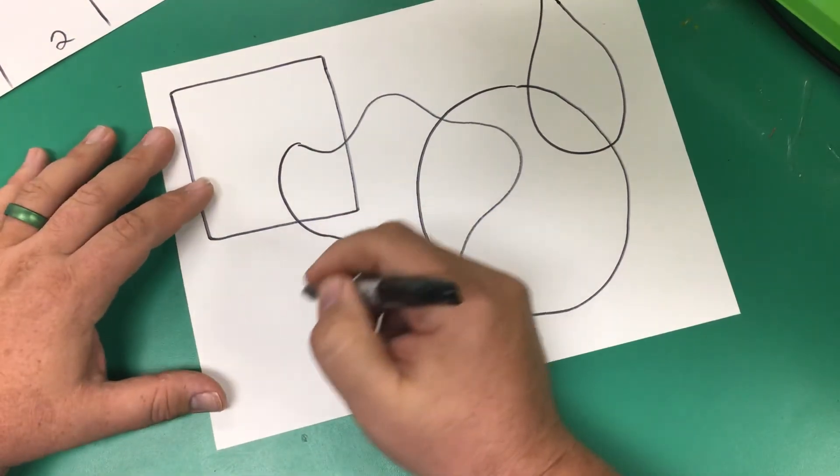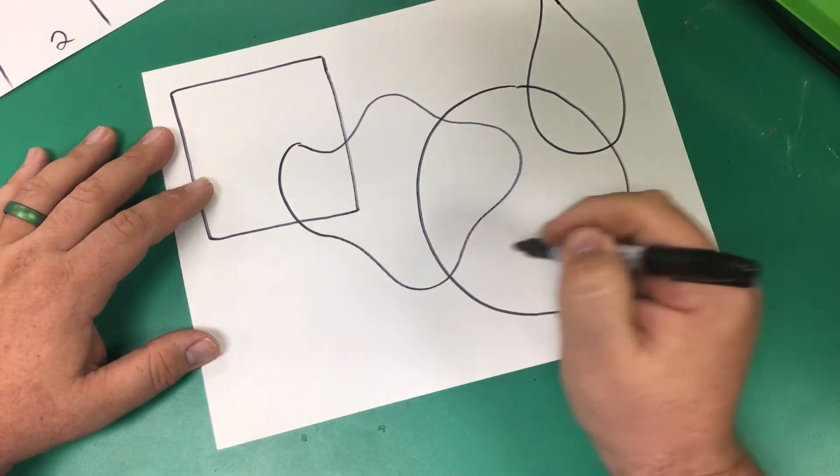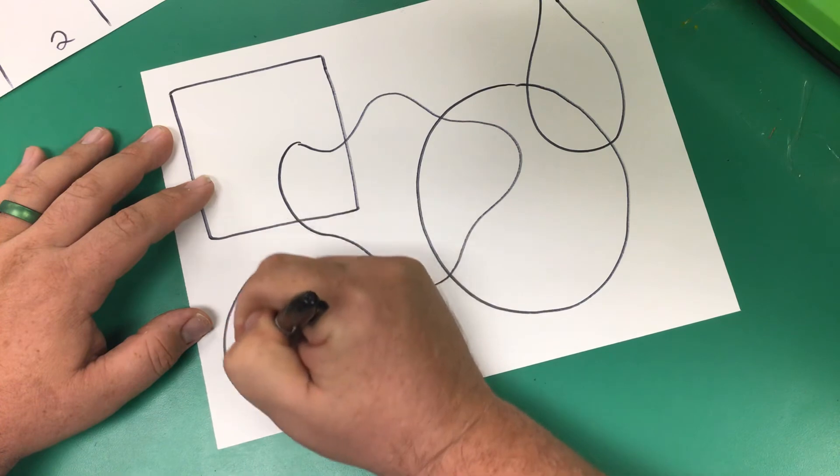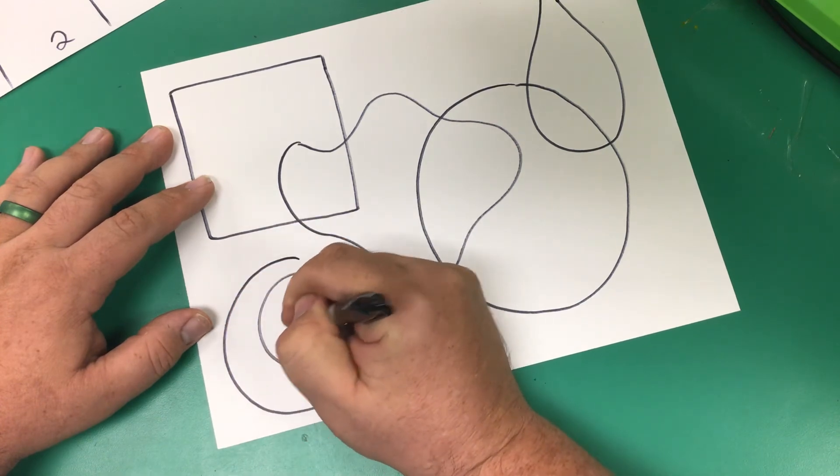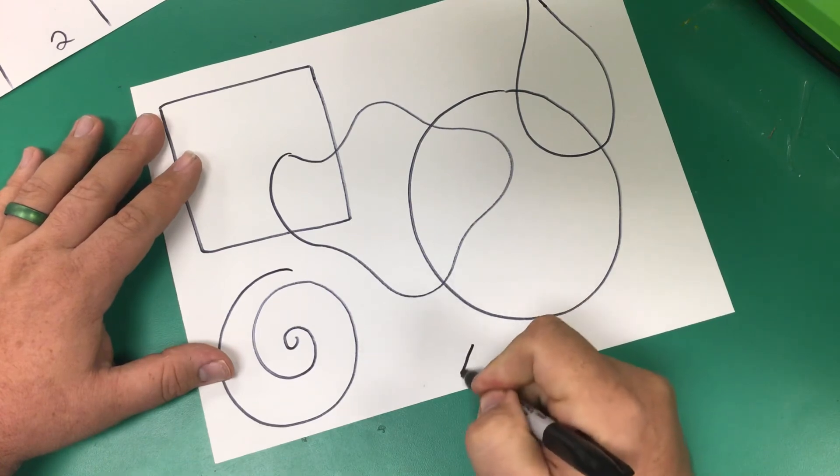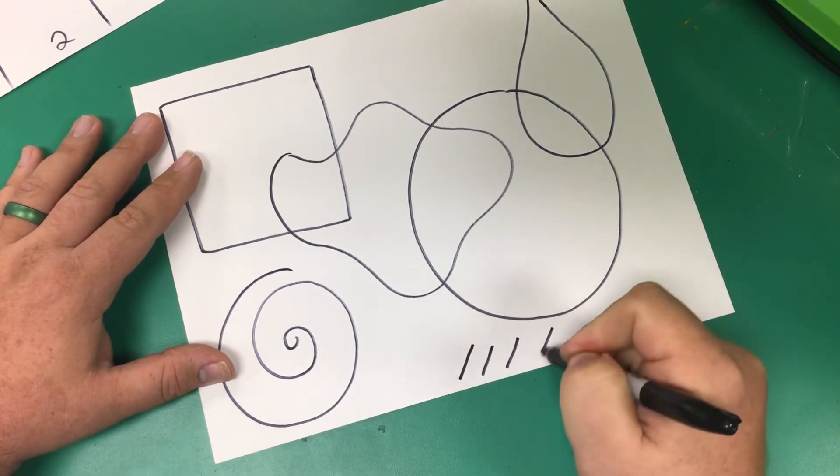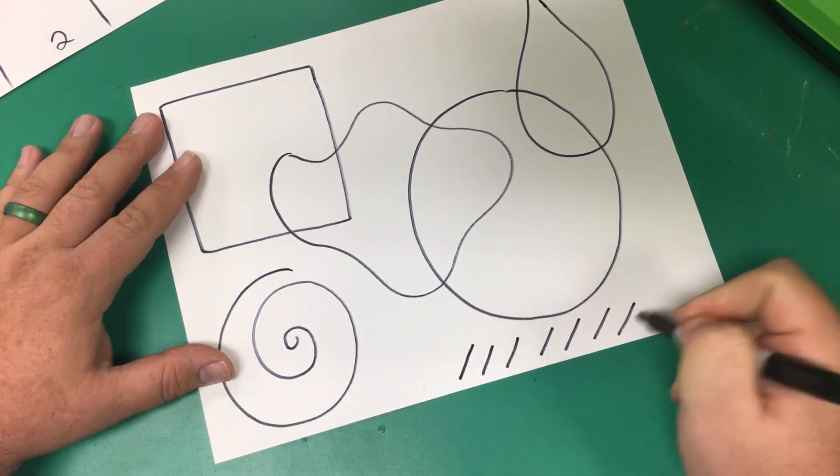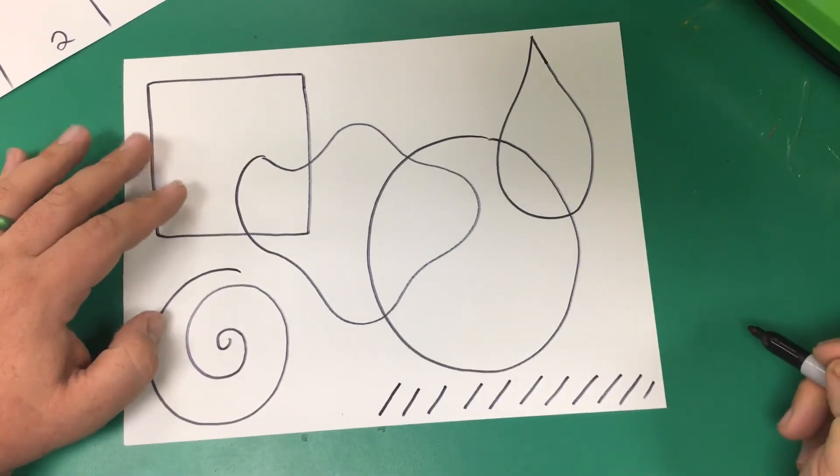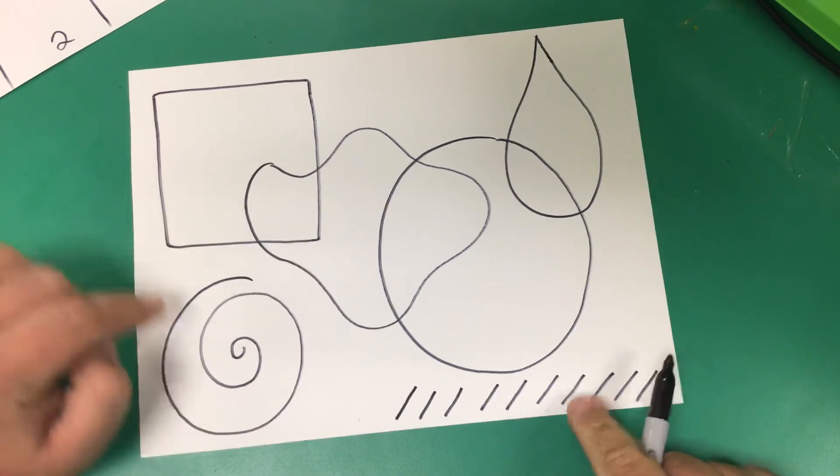Then I'm going to put, hmm, I think I'll put a spiral right here. And then here, I'm going to make diagonal lines.